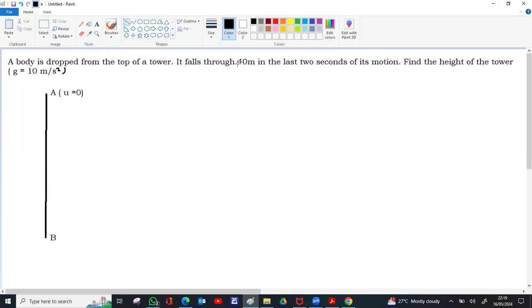Now it falls through 40 meters in the last two seconds of its motion. So C to B may be the last two seconds, so that this distance is 40 meters, and the time for C to B is equal to two seconds.